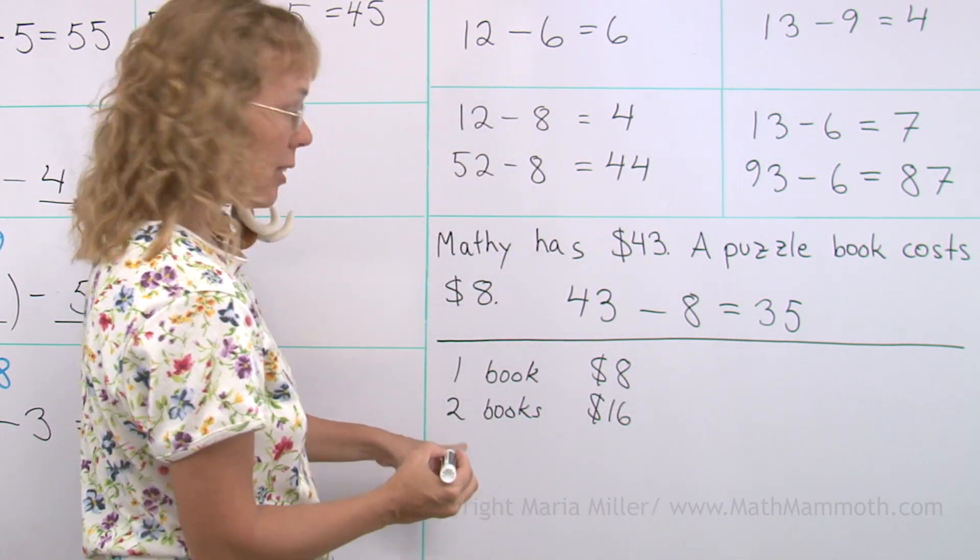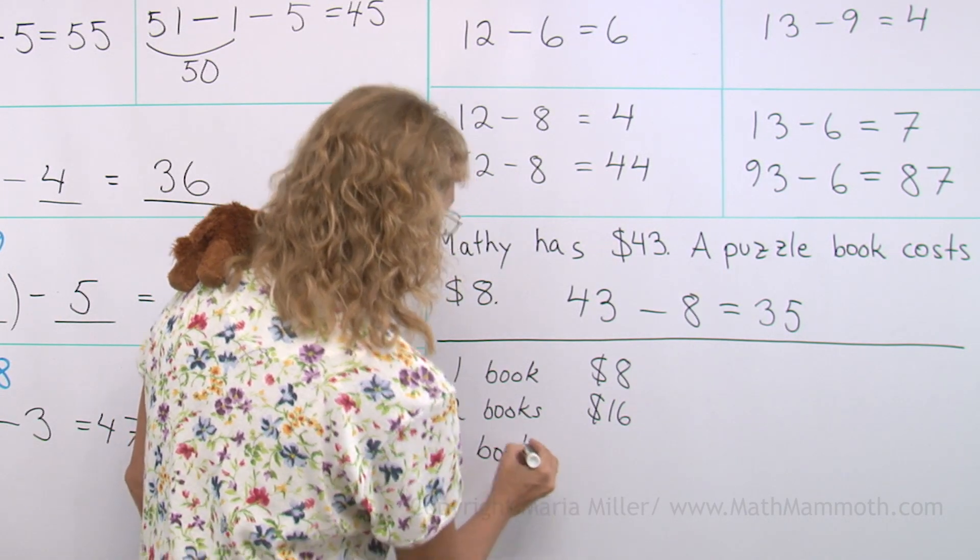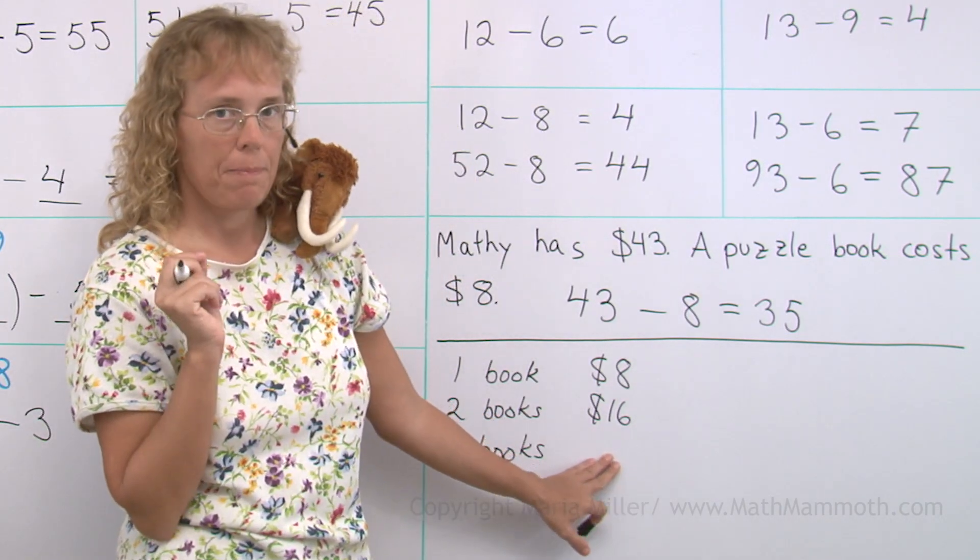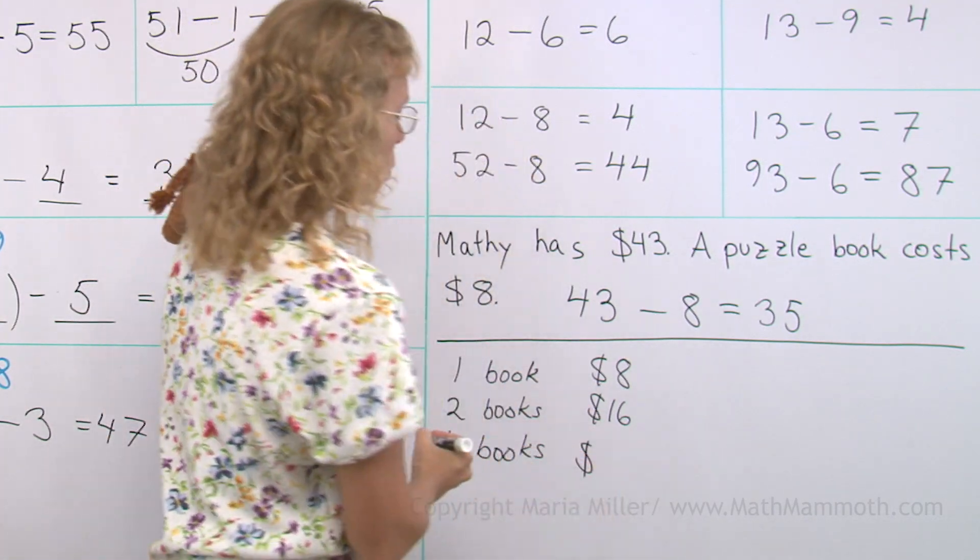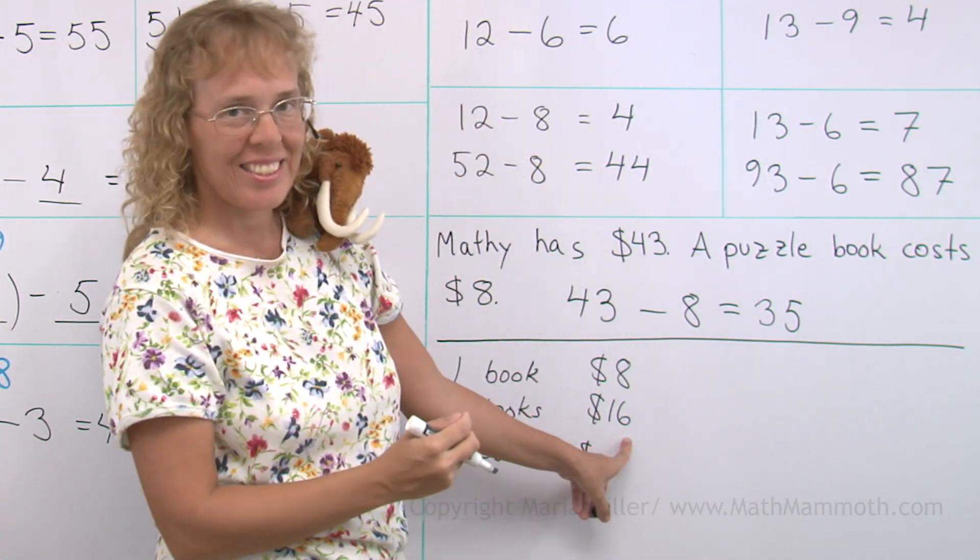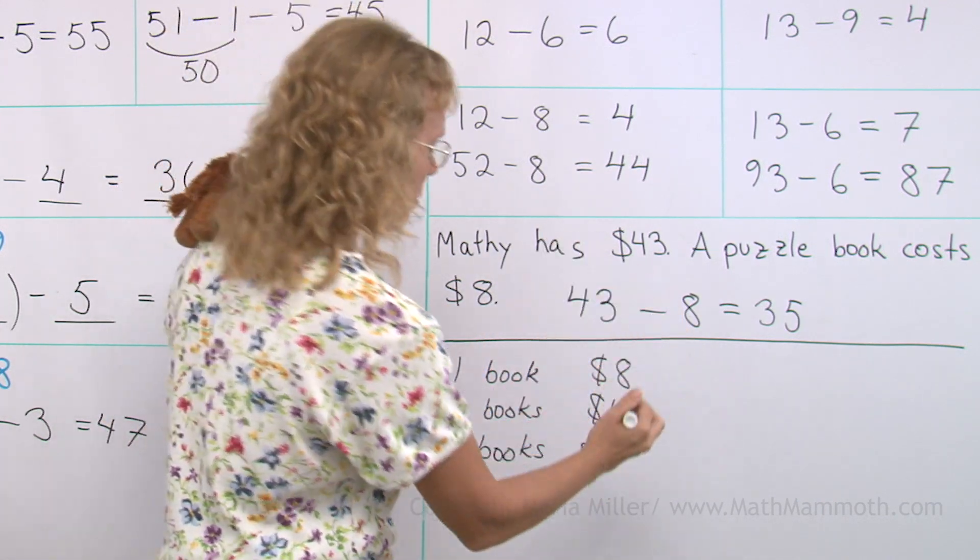And then, let's double that. Four books, what's double 16? Well, there's 10 and 6, and 10 and 6. You will get 20 and 12, which is 32.